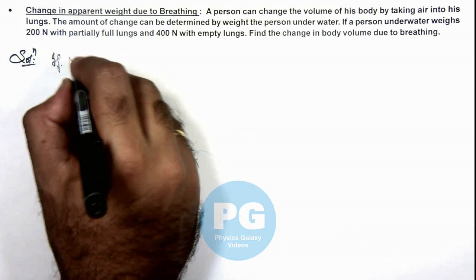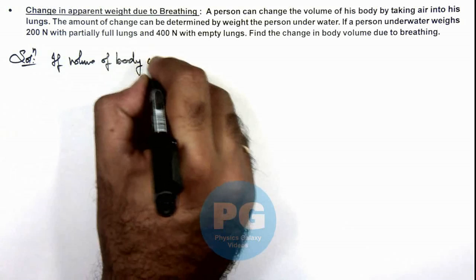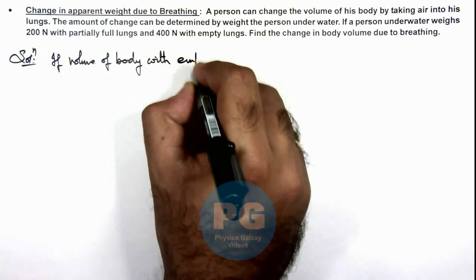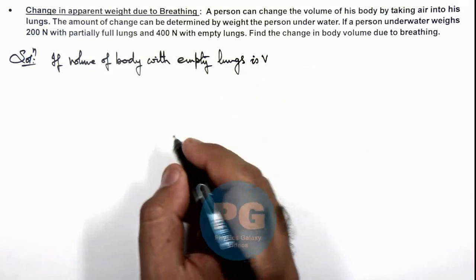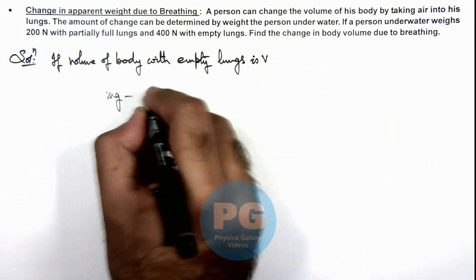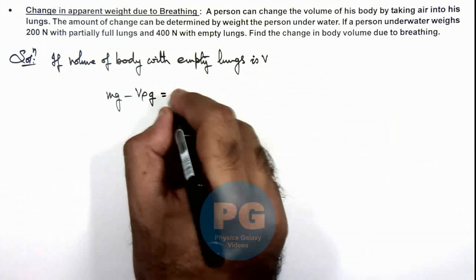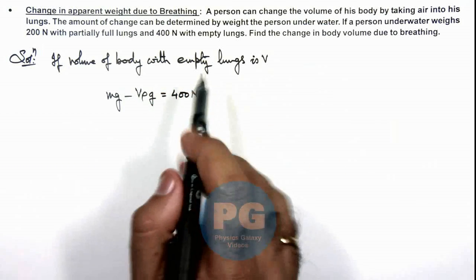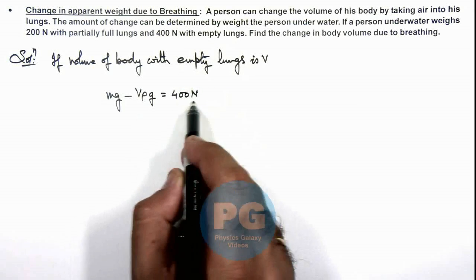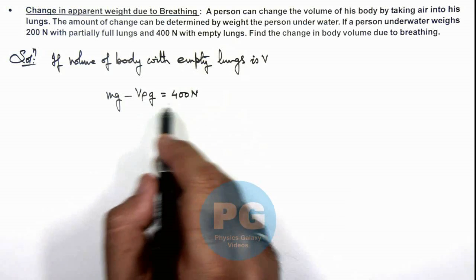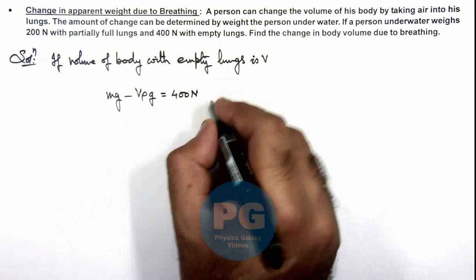If the volume of the body with empty lungs is V, then we can write: body weight minus V·ρ·g, which is the buoyant force acting on it, should be equal to 400 newton, as we are given that with empty lungs the apparent weight is 400 newton. So the effective weight is body weight minus the buoyant force. We take V·ρ·g as the buoyant force for the first equation.